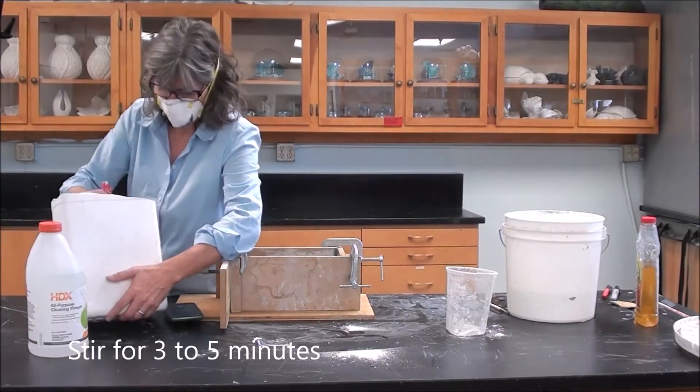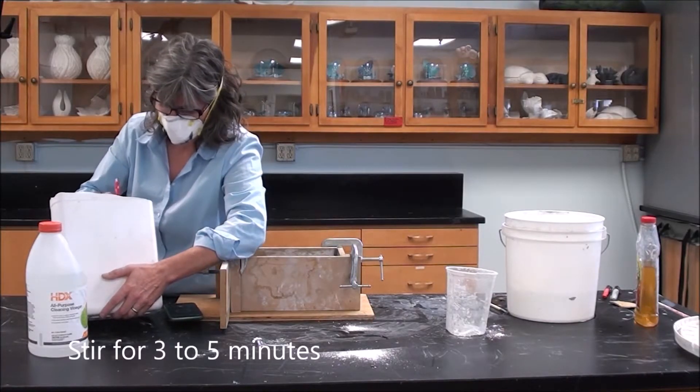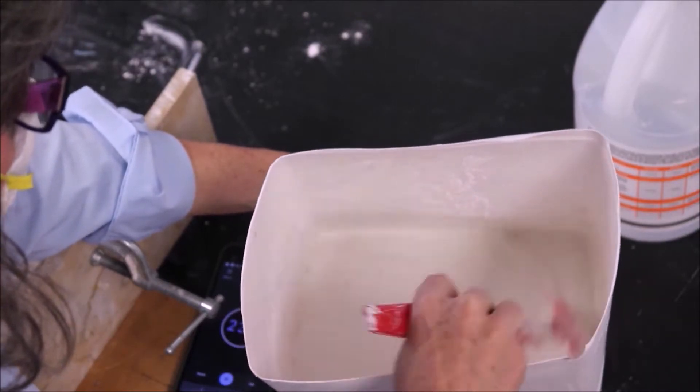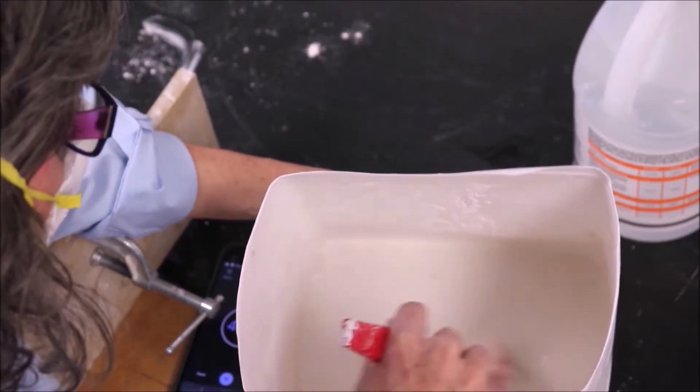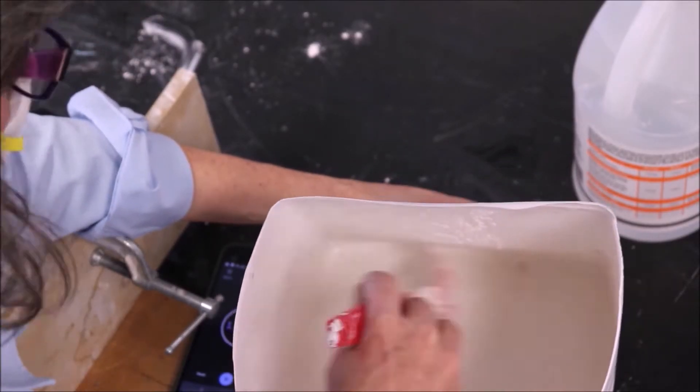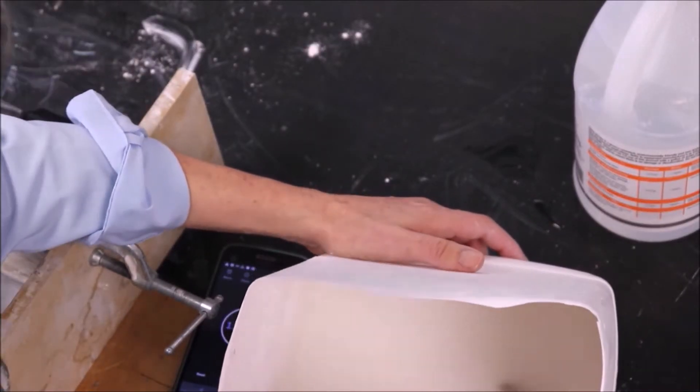After you slake your plaster, then you need to stir it for 3 to 5 minutes. The reason you want to stir your plaster for 3 minutes is so that it will fully absorb the water. If you don't stir it for the full 3 minutes, you will find that after you pour your plaster in between your coddle boards, you'll end up with a thin film of water at the very top as it sets up.